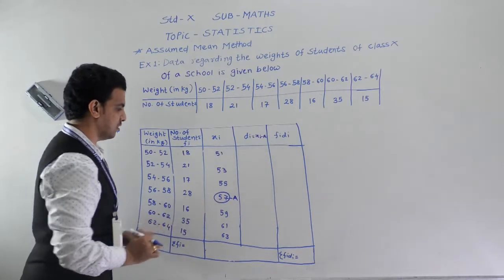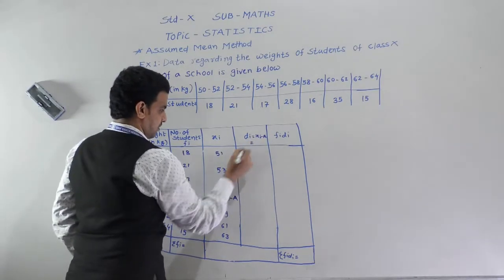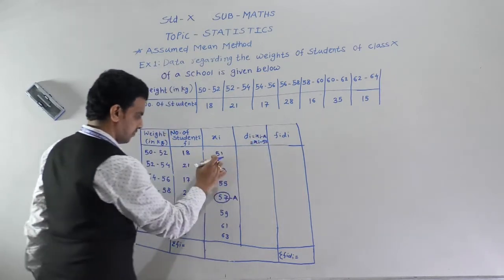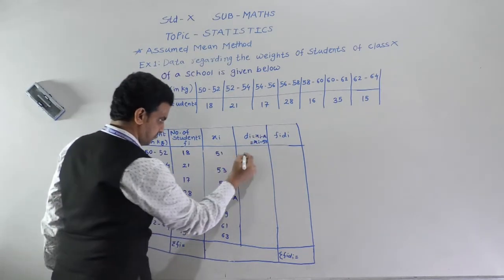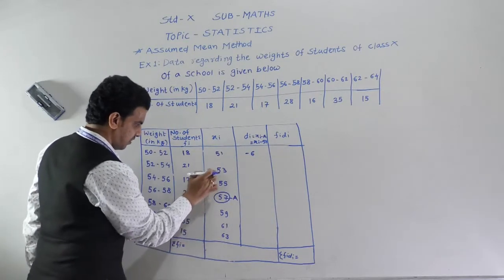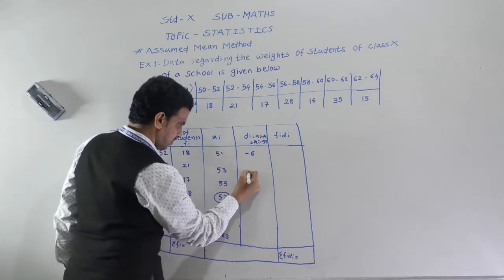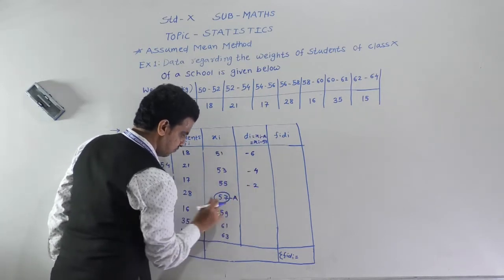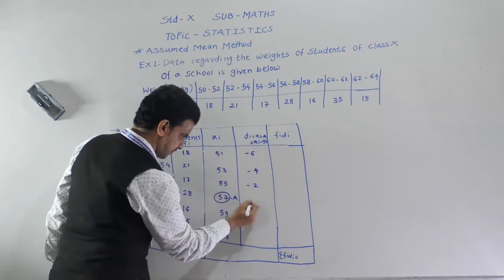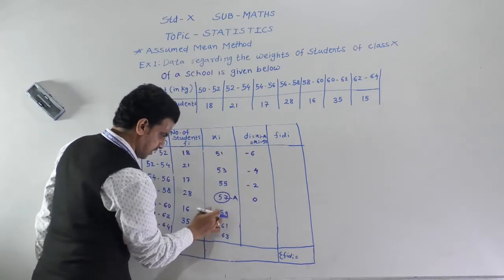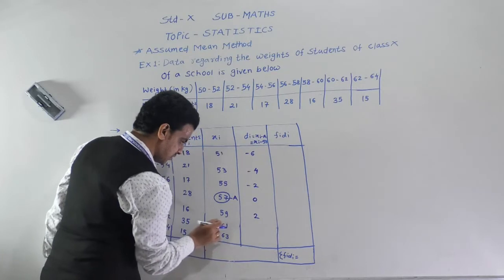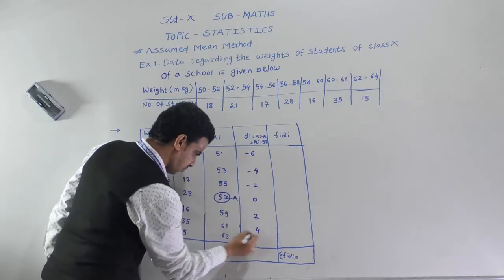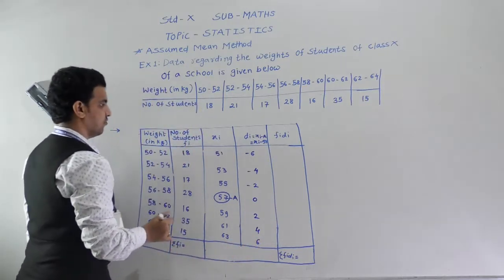Now we find di = xi − 57 for each class mark: 51 − 57 = −6; 53 − 57 = −4; 55 − 57 = −2; 57 − 57 = 0; 59 − 57 = 2; 61 − 57 = 4; 63 − 57 = 6.